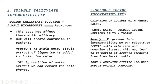Coming to soluble iodide incompatibility: this is an oxidation-reduction reaction where ferric salt reacts with iodide to form ferrous salt, which is an undesirable product. To avoid this, we use Method B — replacing ferric salt with iron and ammonium citrate along with iodide to form an organic compound that is free from ferrous salt.